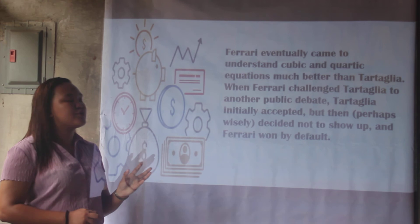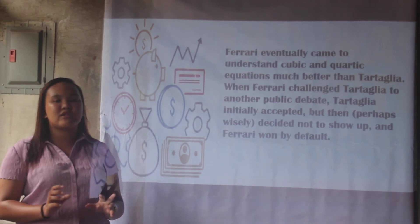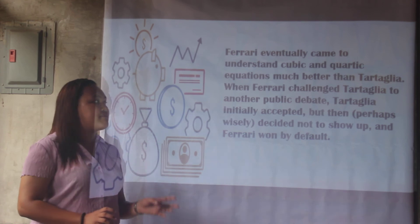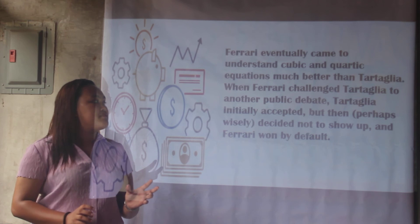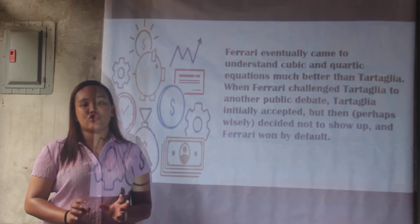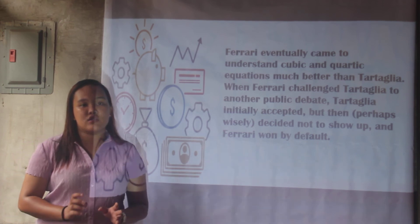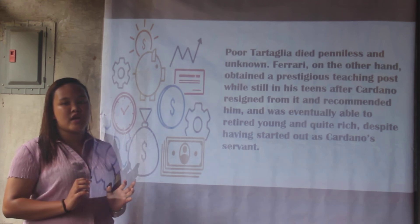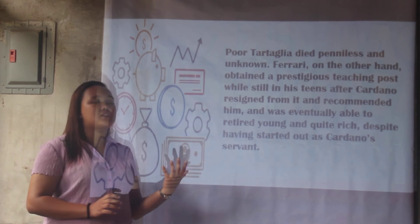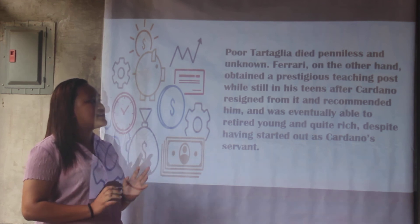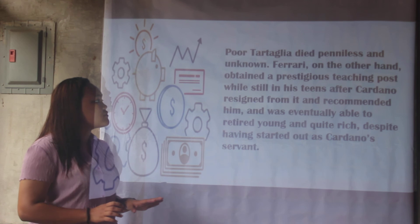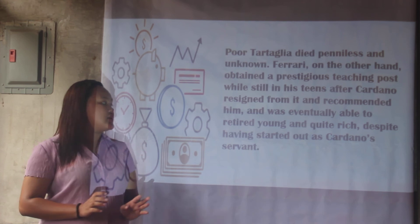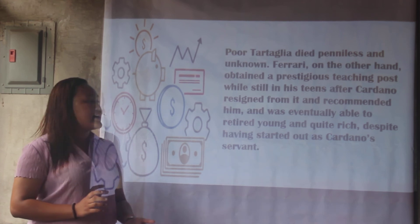Ferrari eventually came to understand cubic and quartic equations much better than Tartaglia. When Ferrari challenged Tartaglia to another public debate, Tartaglia initially accepted but then — perhaps wisely — decided not to show up, and Ferrari won by default. Poor Tartaglia died penniless and unknown, while Ferrari obtained a prestigious teaching post while still in his teens after Cardano resigned and recommended him, and was eventually able to retire young and quite rich, despite having started out as Cardano's servant.